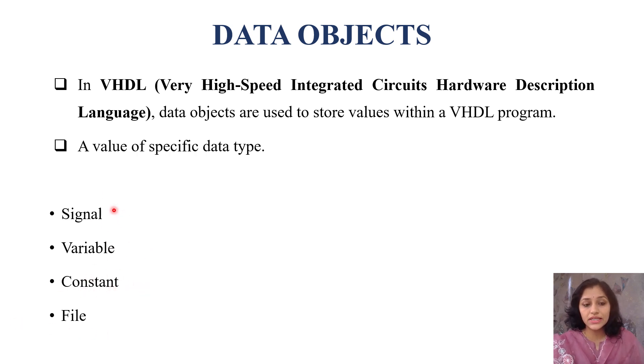Out of these four, signal and variables store multiple values; their values can change during simulation. Whereas value of constant remains constant, and file data type is used to take data from external file or to write data into external file during simulation. Let's discuss each data type in detail.